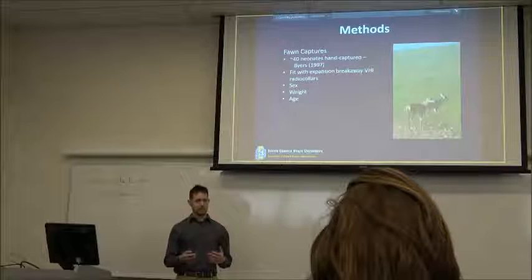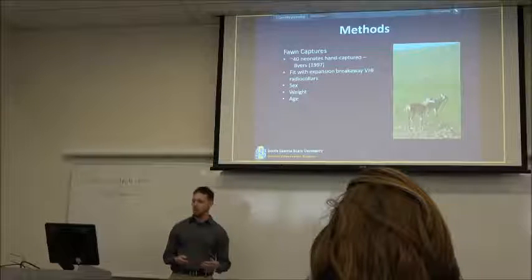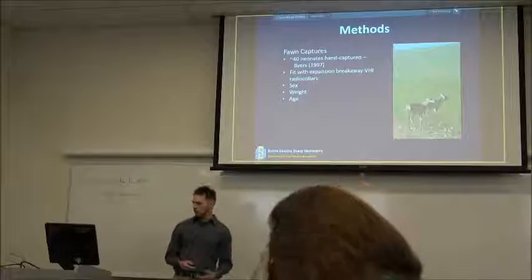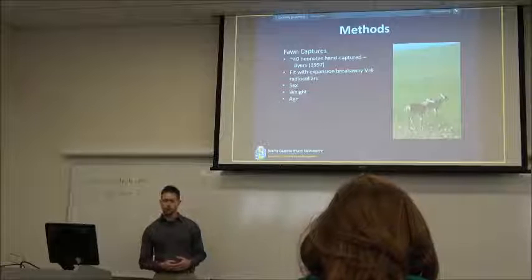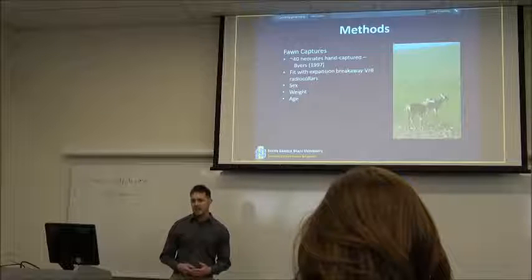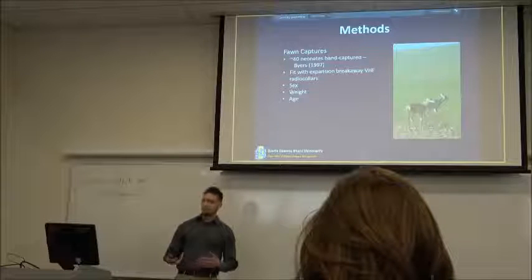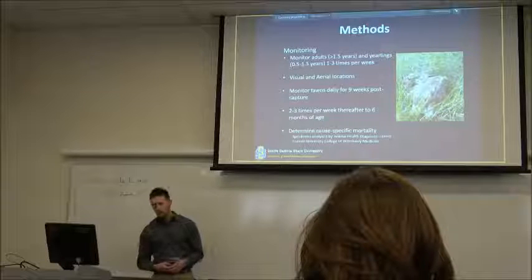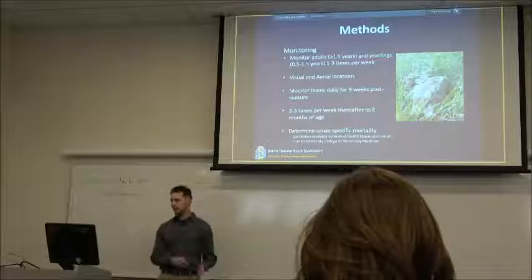Additionally, we want to capture at least 40 fawns for each year of our study using hand capturing methodology provided by Byers. Each fawn will be fitted with a VHF breakaway radio collar that's equipped with a mortality sensor that's designed to activate after four hours when the collar is no longer moving. Each fawn will be determined as a male or female, weighed and then aged based on physiological characteristics such as umbilical condition but also from pre-capture observations.